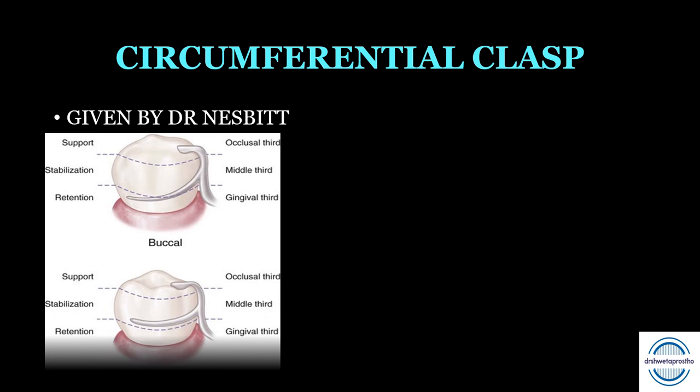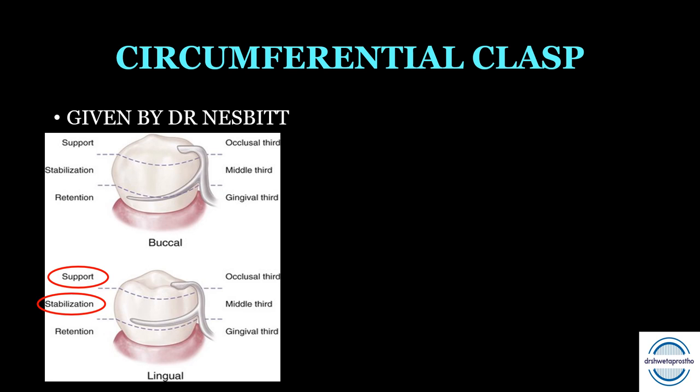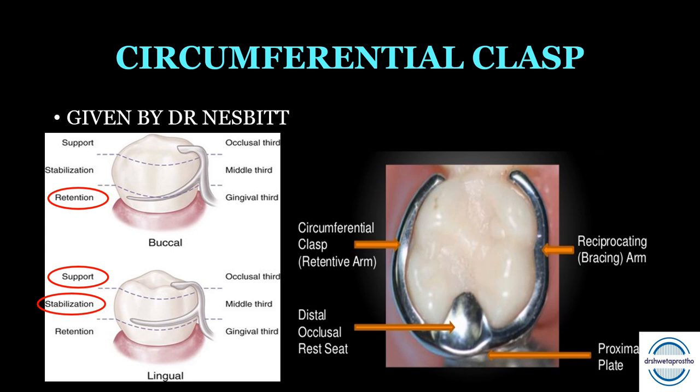Circumferential clasp assembly was introduced by Dr. N.B. Nisbet in 1916. The occlusal third provides support, the middle third provides stabilization, and the retentive terminal in the gingival third provides retention. It provides excellent retention, support, and the retentive and reciprocating arms together give excellent bracing properties. The only disadvantage is that it covers a large amount of tooth surface, making it less aesthetic.